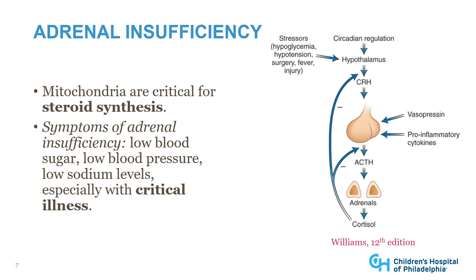Adrenal insufficiency is a problem that can occur and can be life-threatening. Cortisol is produced in response to stressors including hypoglycemia, hypotension, surgery, fever, and other injuries, as a result of signaling originating in the hypothalamus and pituitary. Mitochondria are critical for steroid synthesis, and in individuals with mitochondrial disorders, both primary and secondary forms of adrenal insufficiency have been found. Symptoms include low blood sugar, low blood pressure, and low sodium levels, especially in the setting of stress such as critical illness.